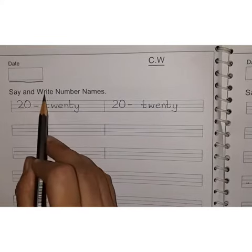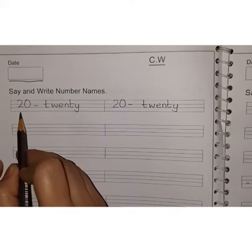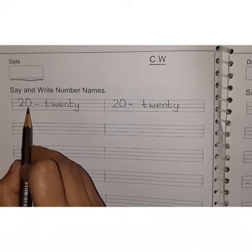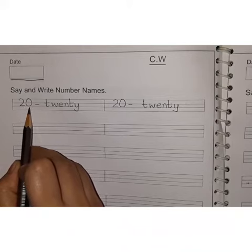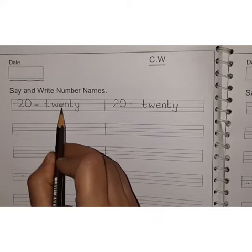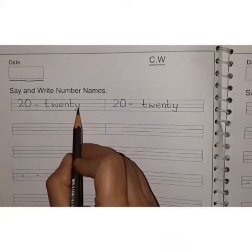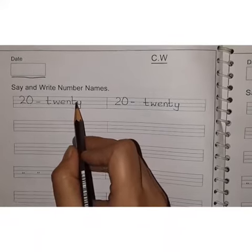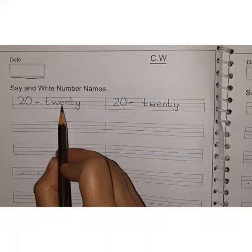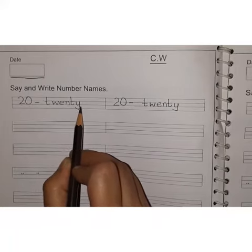Say and write number names. Today we are going to write the spelling of number name 20. And the spelling is T-W-E-N-T-Y, 20. Okay children, repeat along with me: T-W-E-N-T-Y, 20.